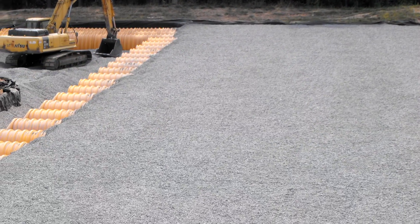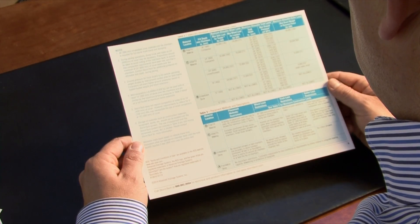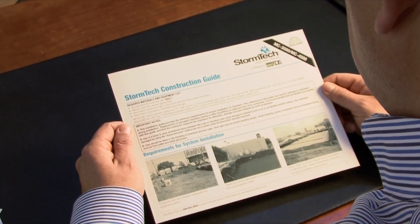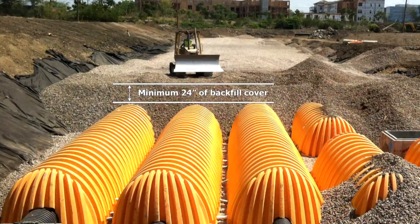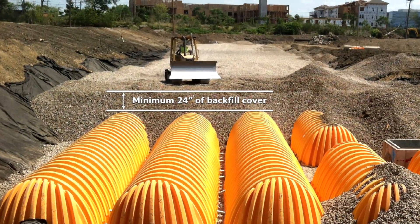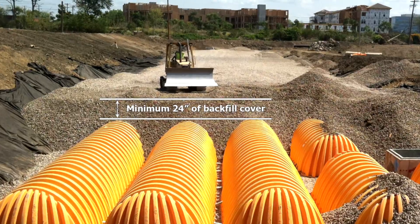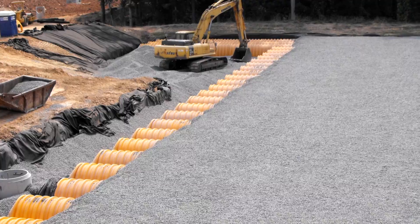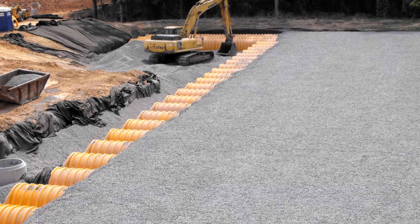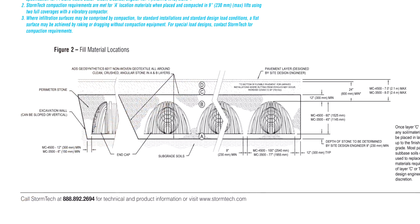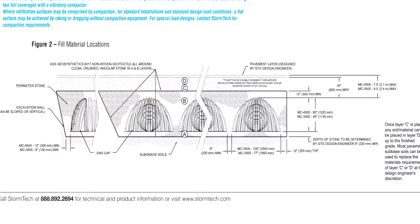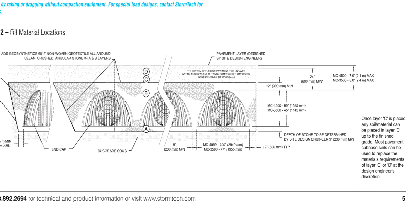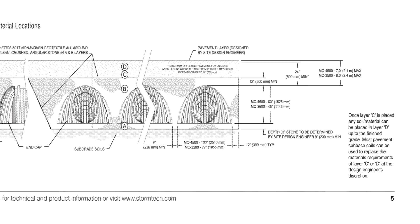Construction vehicle loading must be in accordance with tables found in the MC-3500/MC-4500 StormTech Construction Guide. Rollers and dozers must work in parallel to chamber rows. Minimum cover depth from the top of the chamber must not be less than 24 inches to the base of the flexible pavement. Maximum cover depth from the top of the chamber must not be greater than 7 feet for the MC-4500 and 8 feet for the MC-3500.